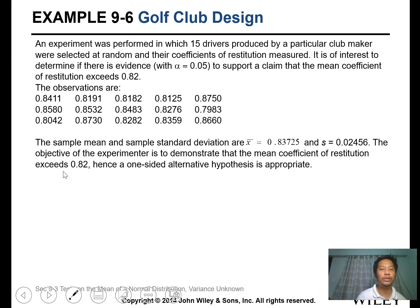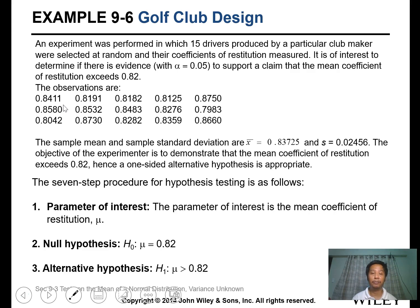Let's have this example. An experiment was performed in which 15 drivers produced by a particular club maker were selected at random, and their coefficients of restitution measured. It is of interest to determine if there's evidence at alpha equals 0.05 to support a claim that the mean coefficient of restitution exceeds 0.82. This is a one-sided hypothesis, greater than 0.82.